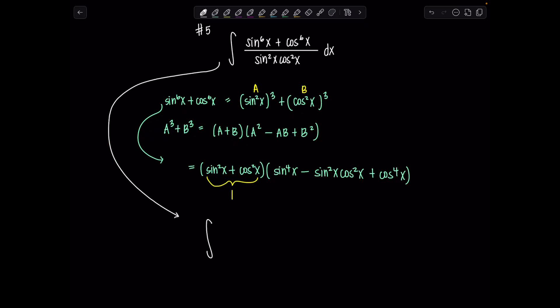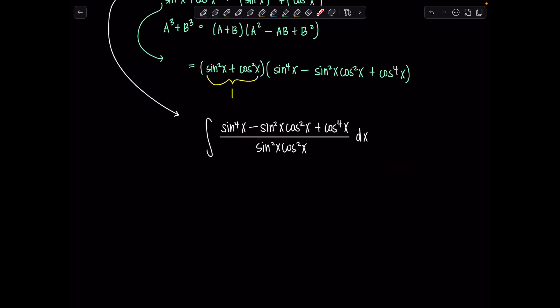So upstairs we have sin⁴x - sin²x cos²x + cos⁴x over sin²x cos²x dx. And then from here, you're pretty much home free. What should inspire you is that we see again this sin²x cos²x up in the numerator.